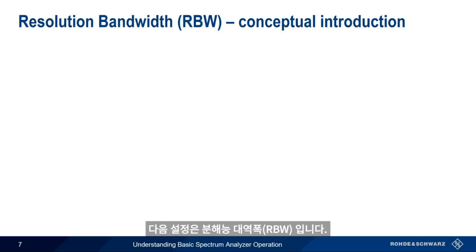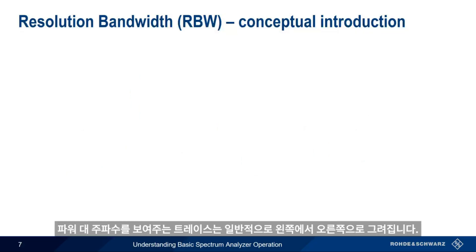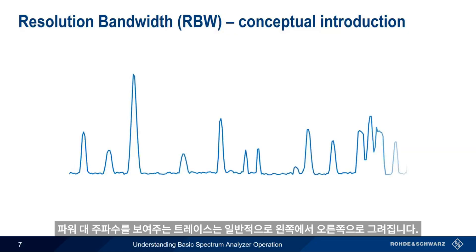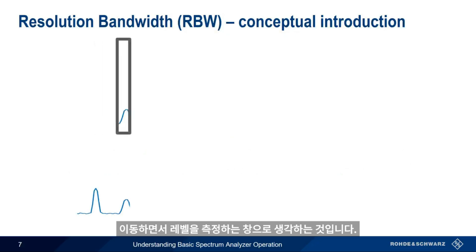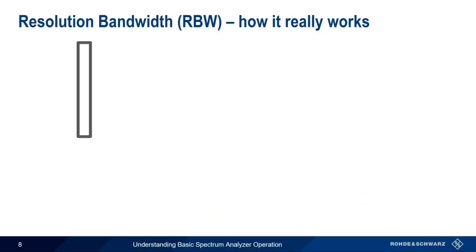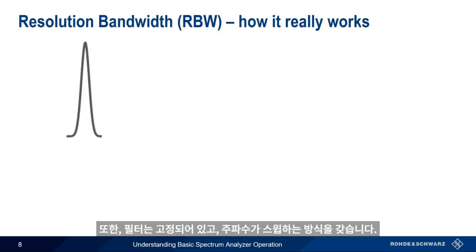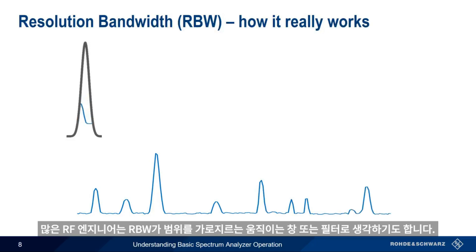Our next setting is resolution bandwidth. For basic spectrum measurements, resolution bandwidth is by far the most important setting. Most spectrum analyzers use the so-called heterodyne principle to measure spectrum by sweeping across the span, drawing the power versus frequency trace from left to right, usually repeatedly. One way to understand resolution bandwidth is to think of it as a window that moves across our span, measuring the level as it goes. In reality, a resolution bandwidth filter isn't actually square but has a Gaussian or similar shape, and the window doesn't move — we slide the spectrum past the window instead, in part because it would be extremely difficult to build a tunable filter that could sweep across wide frequency ranges. The end result is the same, and many RF engineers do think of resolution bandwidth as a moving window or filter that sweeps across a span.